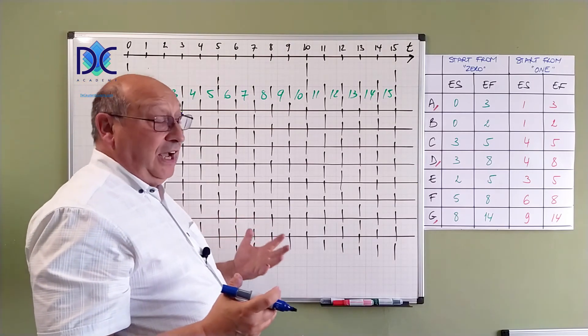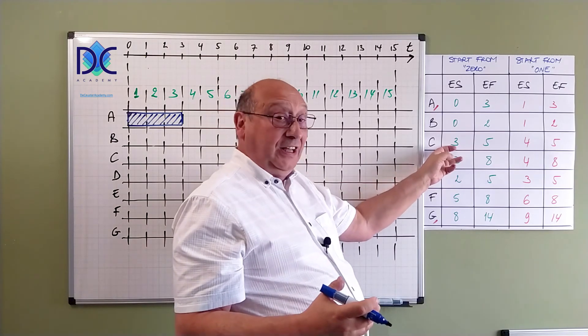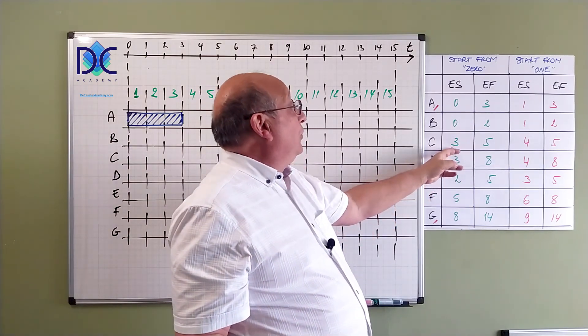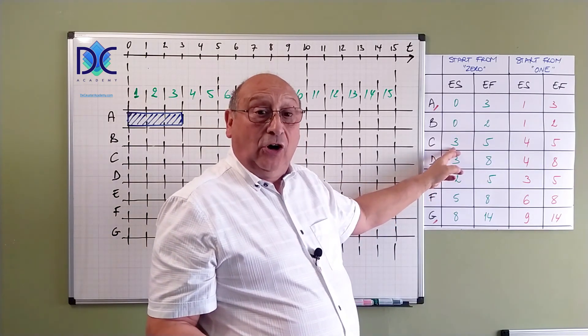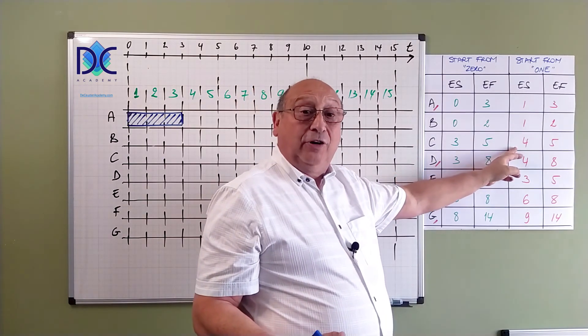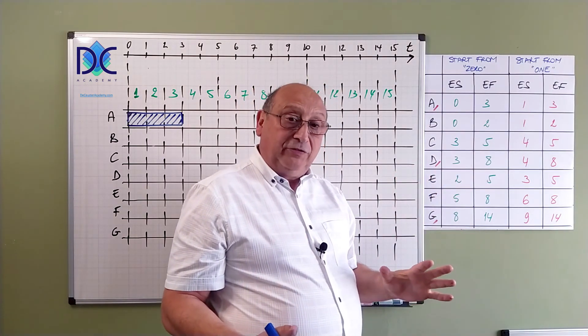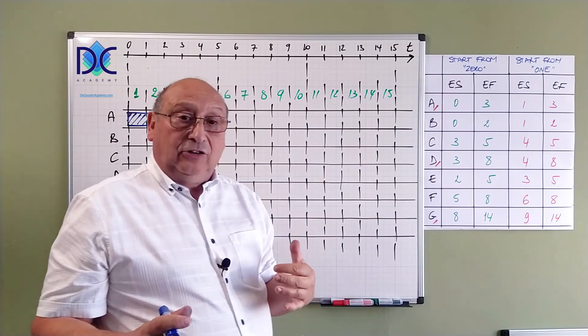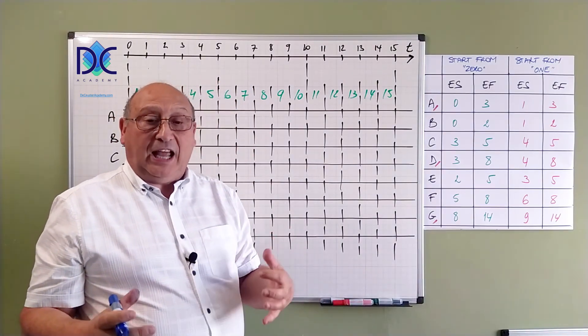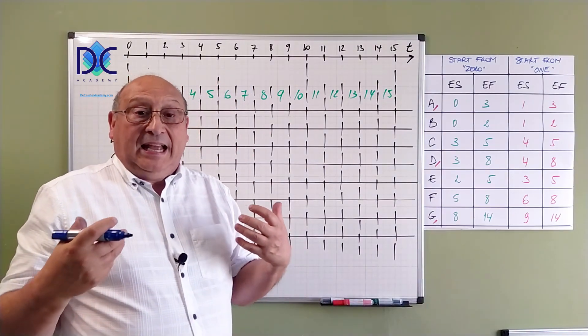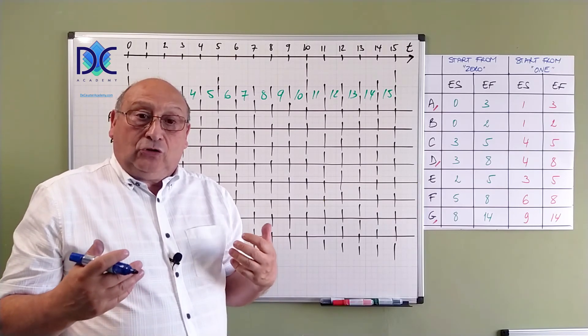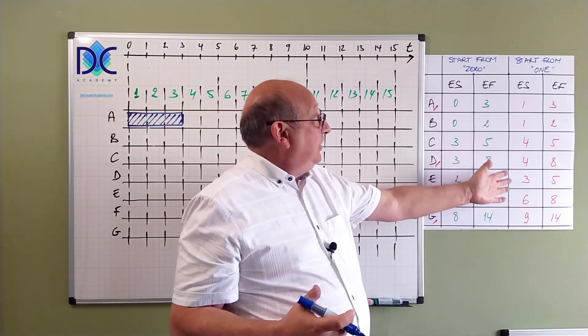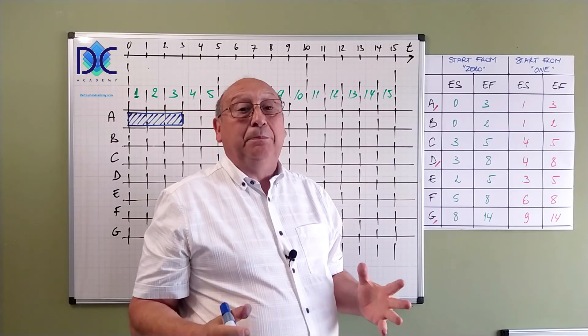If somebody asks you what's the early start of C, did you calculate from 0 or did you start from 1? There is a small difference. Typically, in the examples that we have today, since we're counting with days, the method starting from 1 will typically be used.